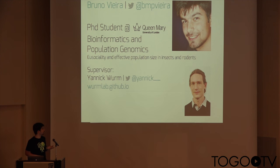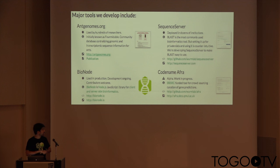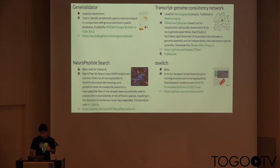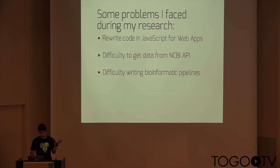Bionode started as a side project of my PhD at Queen Mary. I'm doing a PhD in population genomics at the worm lab. You should actually check our website, because we have a bunch of web tools — for example, to crowdsource genome annotation, or to check if your gene predictions are correct, or switch between operating systems using Docker. A lot of these tools rely on JavaScript, so I was involved in some of these projects, and what ended up happening was that I had to rewrite a lot of code in JavaScript.